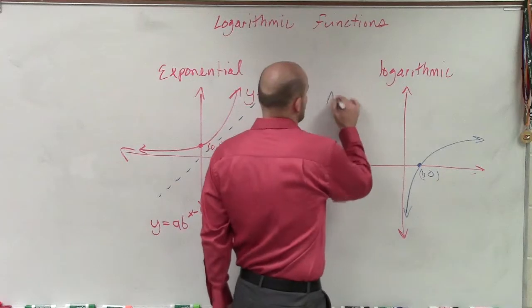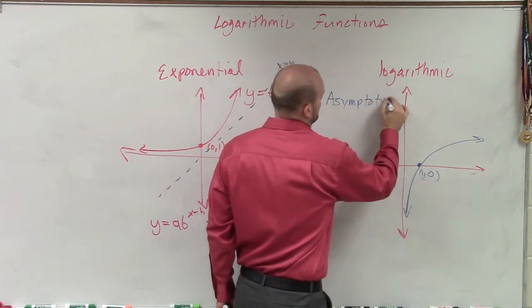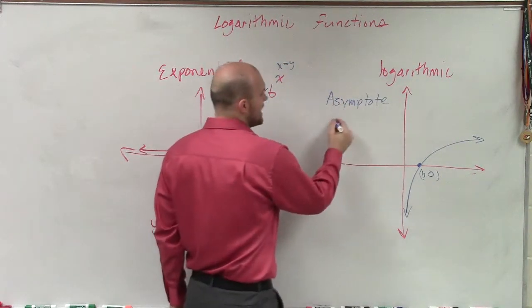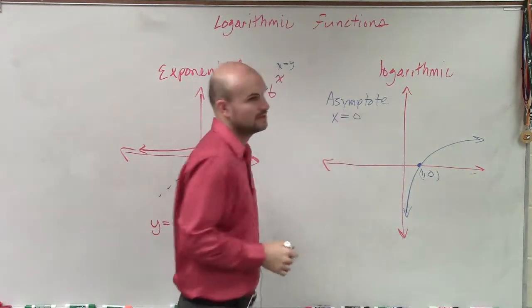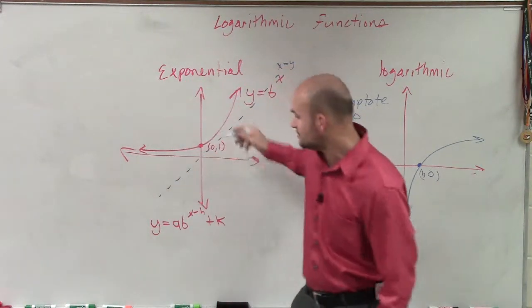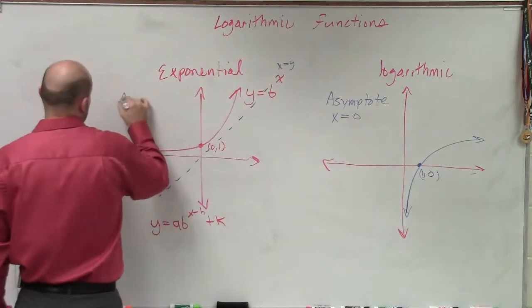And it also has now an asymptote. The asymptote is now when x equals 0. Because remember over here, the asymptote was y equals 0. We'll talk more about that in a second.